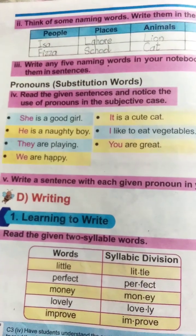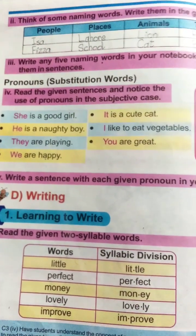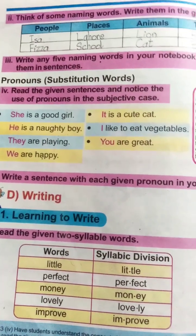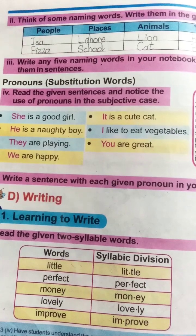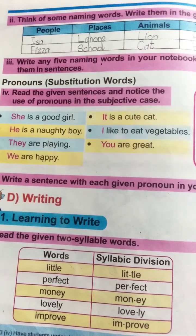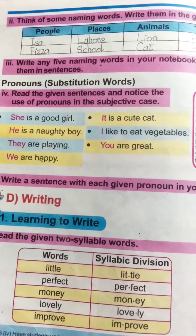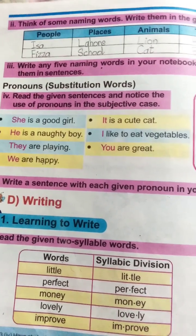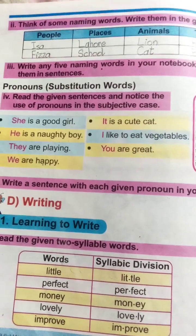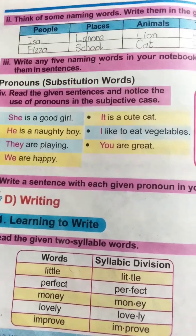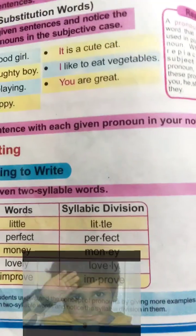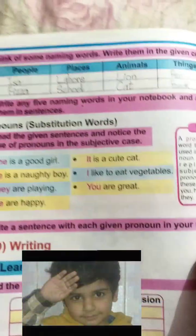Bismillah ar-Rahman ar-Rahim. Assalamu alaikum warahmatullahi wabarakatuh. Dear students, we have started English Grade 2, Unit Number 1 - 'The Tiny Creature.' A tiny creature means a tiny makhluk. It is a poem about the cricket. Page number 9, and today we will solve it.